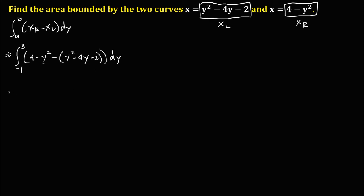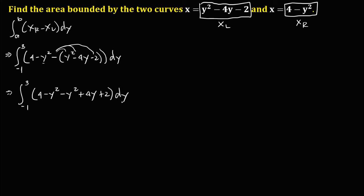So we have the integral from negative 1 to 3 of (4 minus y squared) minus (y squared minus 4y minus 2) dy. Distributing the negative sign, this becomes the integral of 4 minus y squared minus y squared plus 4y plus 2 dy. Combining like terms: 6 minus 2y squared plus 4y dy.